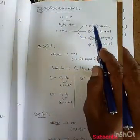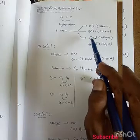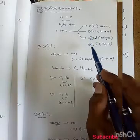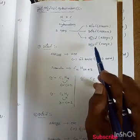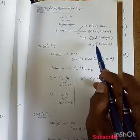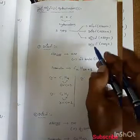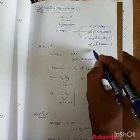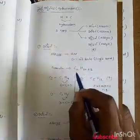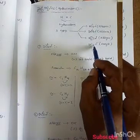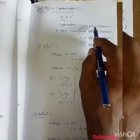Now we will see three types. First is Alkyl. It talks about R, and R and R. It talks about hydrocarbons.